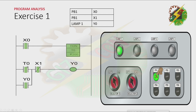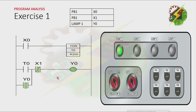The timer is now activated. Because T0 is activated, all the contacts of T0 will change. And because there's T0 here, it will activate Y0. And because there's latching, even if we turn off T0, Y0 will still be on. The only way to turn it off is by pressing X1 or PB2.